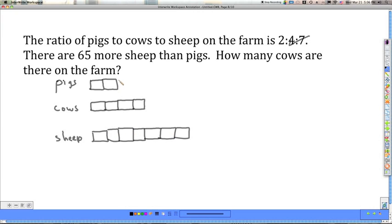So if I were to draw a line right here, this would be the number of units of sheep that are more than pigs. That's 65 sheep.